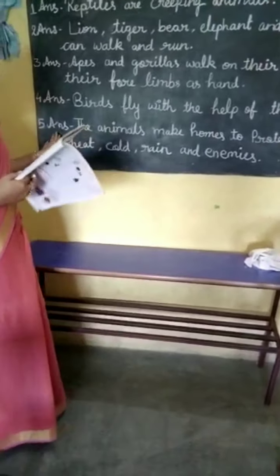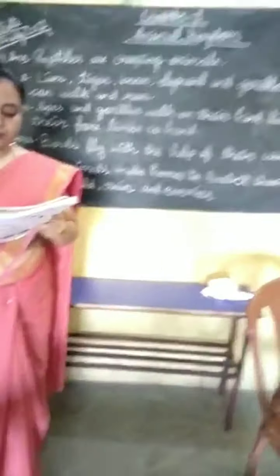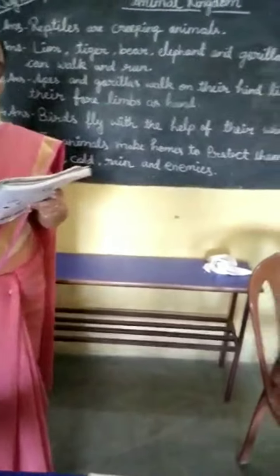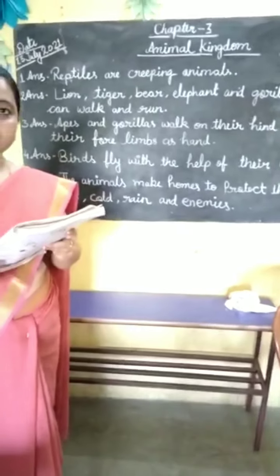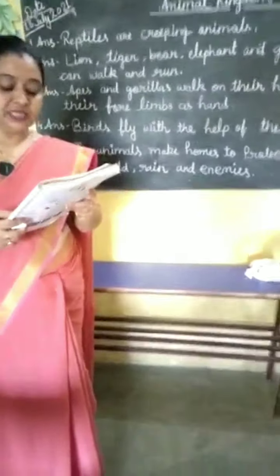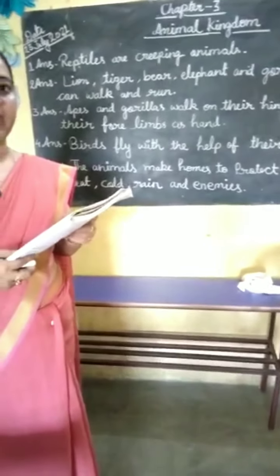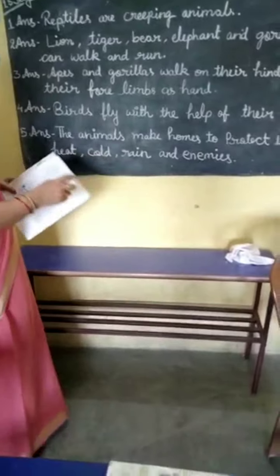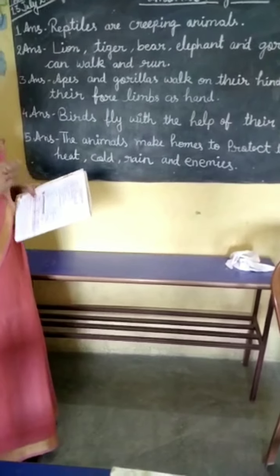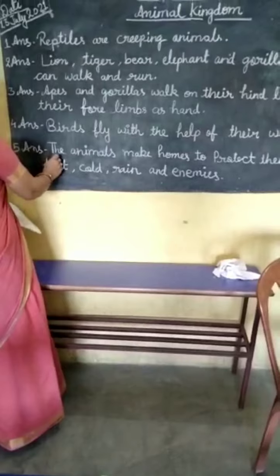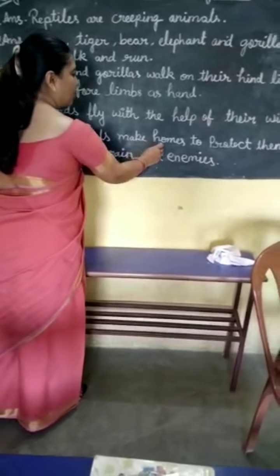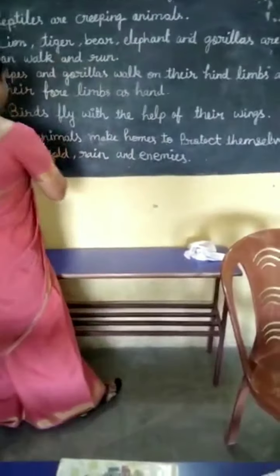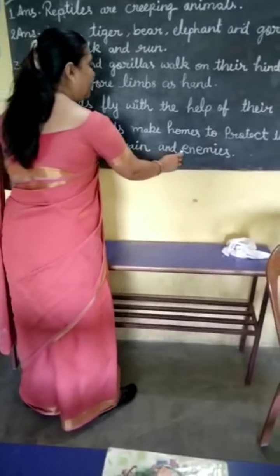Question number five: Why do animals make their homes? Animals make homes — you all know what a home is for: it is for our protection. So the answer is: animals make homes to protect themselves from rain and enemies.